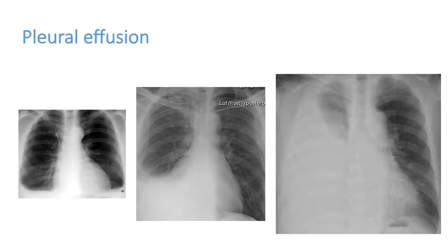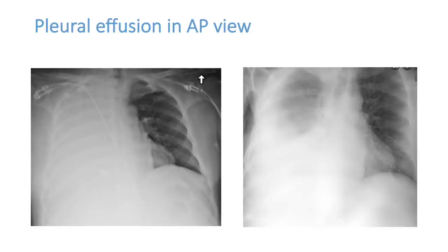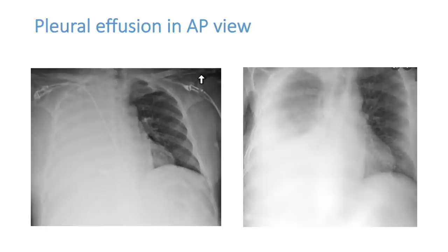An encysted pleural effusion means the effusion is present but a cyst has formed on the outer aspects of the effusion, so it will not look like a normal pleural effusion. One part of the effusion will always be towards the upper lateral side. This is classically seen in tuberculosis. In ICU x-rays taken as AP view with the patient lying down, pleural effusion will look like a ground glass opacity rather than the classic appearance.